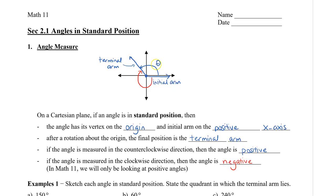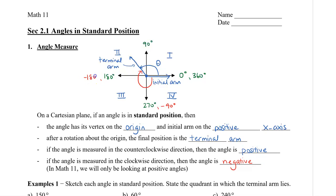When we describe angles, we can say that they're in quadrant 1, 2, 3, or 4. When we measure angles, we start on the initial arm at 0 degrees. Then this would be 90 degrees, 180 degrees, then 270, and then back to 0, which would be 360 degrees. Just for your information, if we did go in the other direction, this would be negative 90, negative 180, negative 270, and then negative 360.